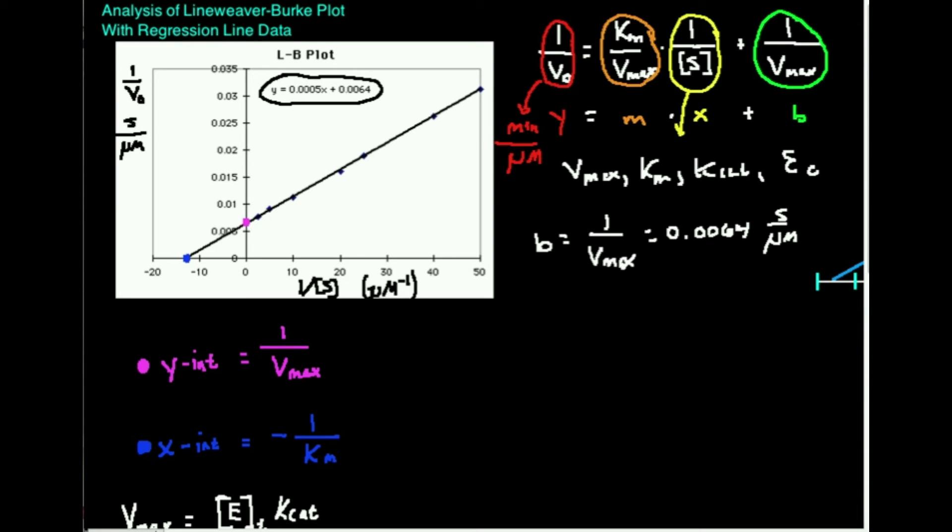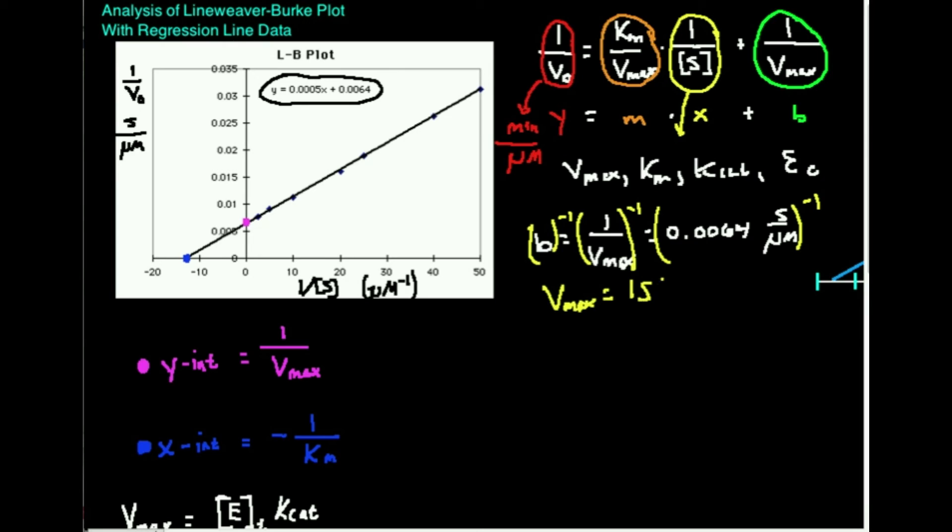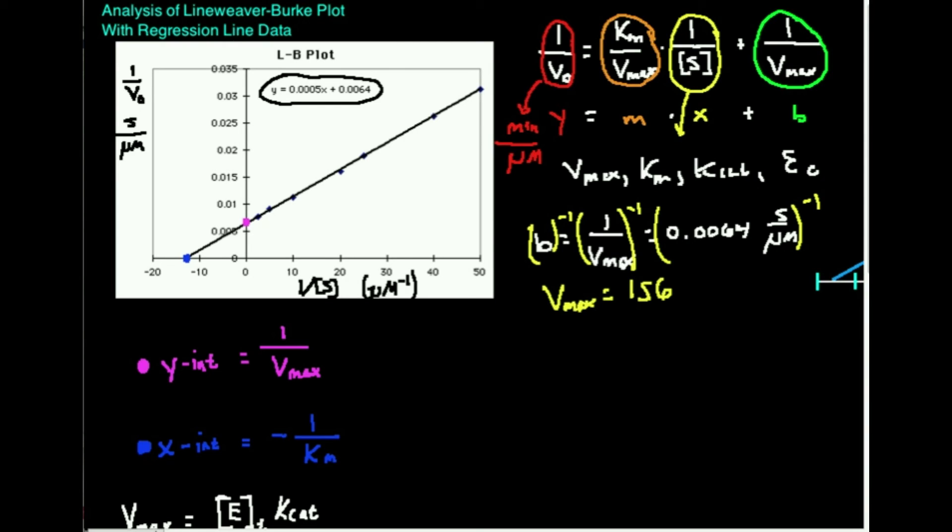The way I would determine the Vmax is I would simply take the reciprocal of everything here. So that's going to give me the Vmax is equal to, let me use my calculator and take the reciprocal, 0.0064. And I have determined the Vmax is 156.25, and that is micromolar per second. That is the Vmax of this enzyme. And again, I did that because I can take the reciprocal of the y-intercept.